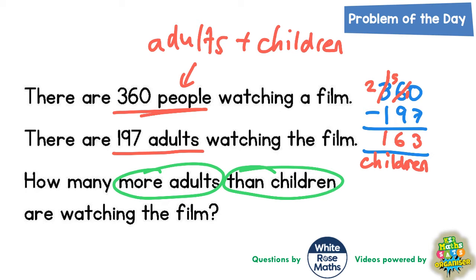But this is not the final answer, because the question doesn't ask how many children are watching the film — it asks how many more adults than children are watching. So now we have 197 adults and 163 children.